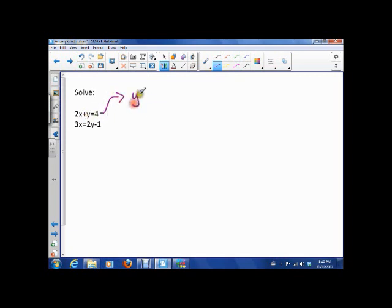So what I can do is I can see that in this one it's pretty easy to isolate y. So I will, and I'll say that y is the same as 4 minus 2x. So I subtract 2x from both sides. Here it goes away, here I get minus 2x.